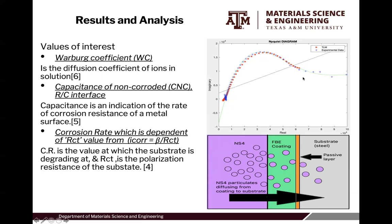As you can see in our Nyquist diagram, we have our experimental data, which was curve-fitted to our TLM. The blue indicator shows that we have a defect in our substrate. One way to illustrate how this happens is through diffusion — our corrosive species diffuses through our coating, through the passive layer, eventually goes through our steel substrate, and creates the defect, which is the holiday.